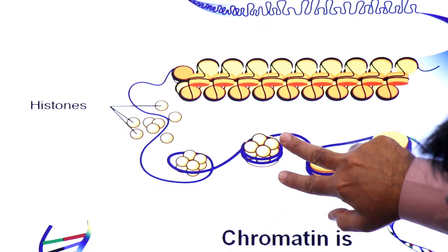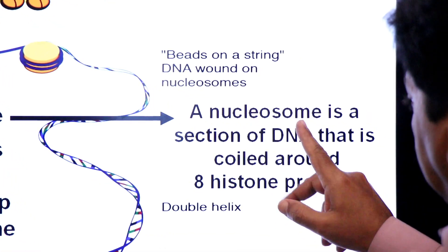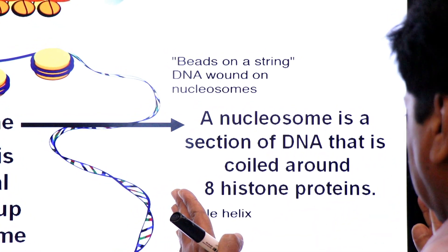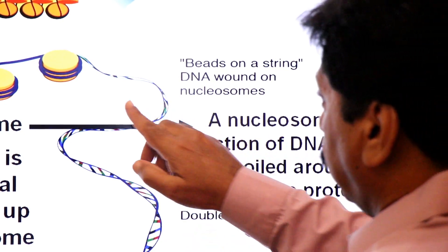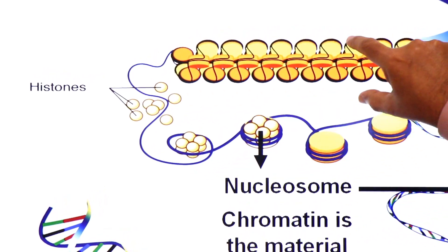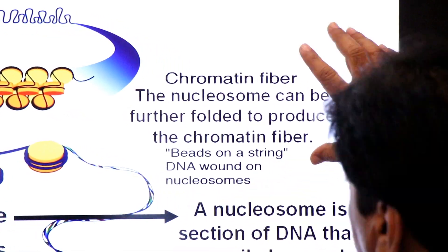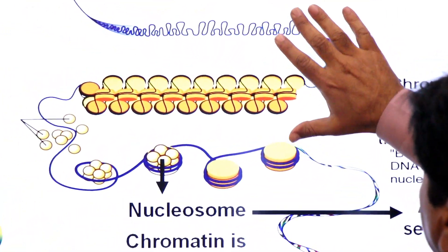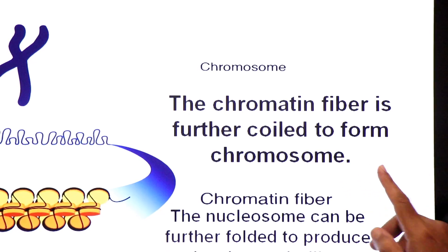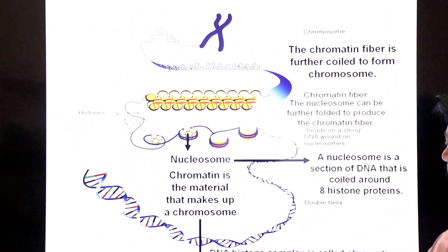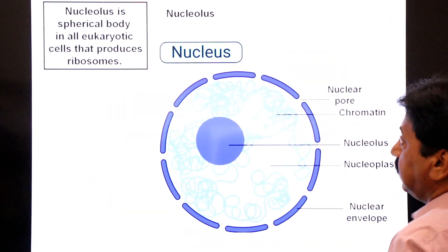What is a nucleosome? A nucleosome is a section of DNA — two turns of DNA — that is coiled around eight histone proteins. A nucleosome can be further folded to produce chromatin fiber, and chromatin fiber is further coiled to form chromosomes.